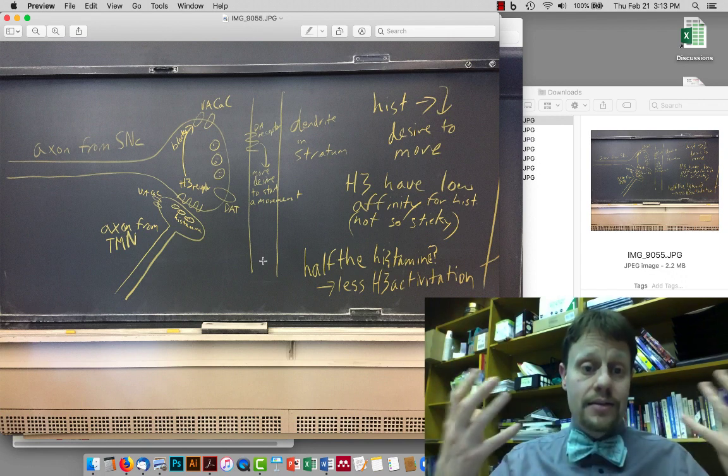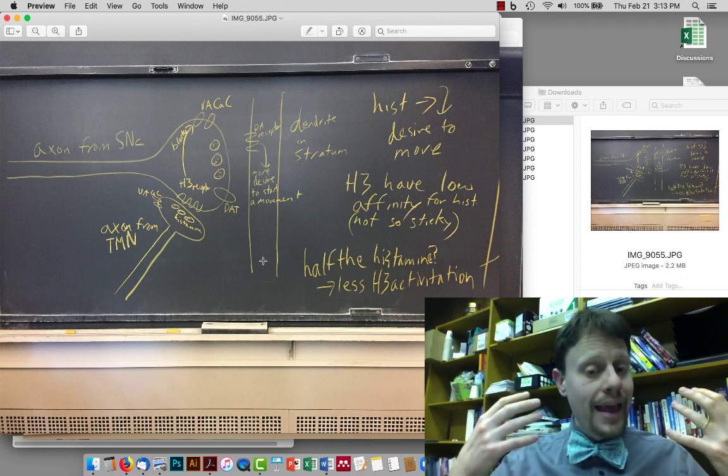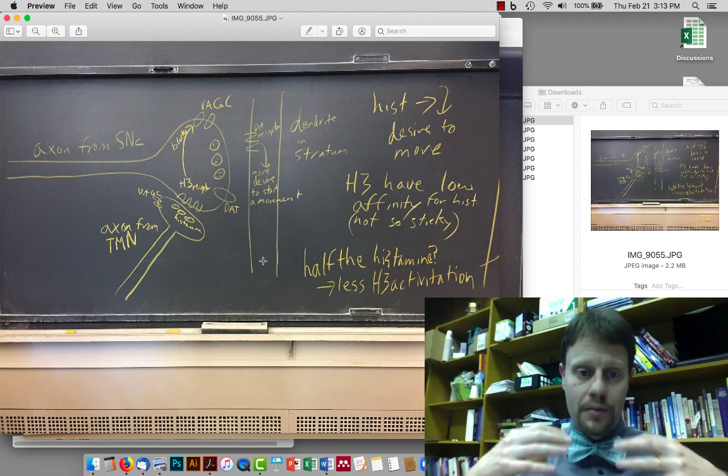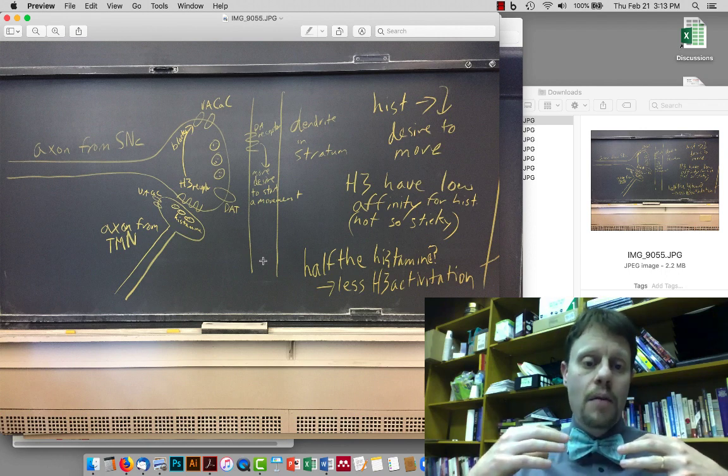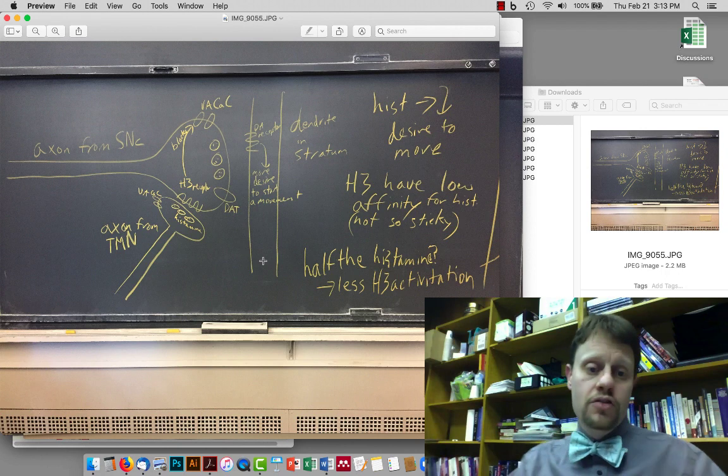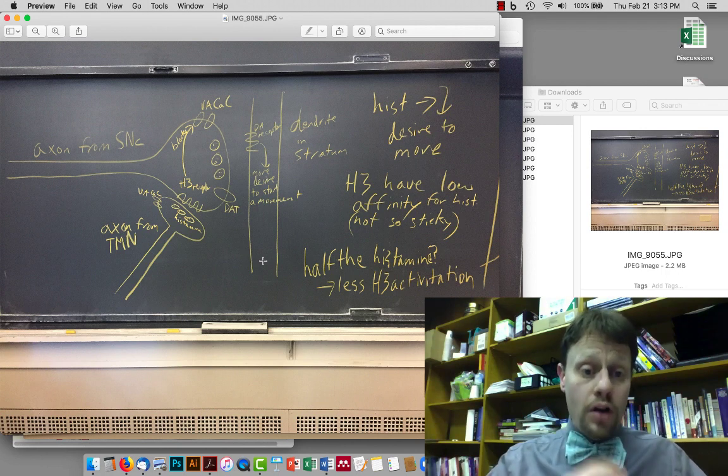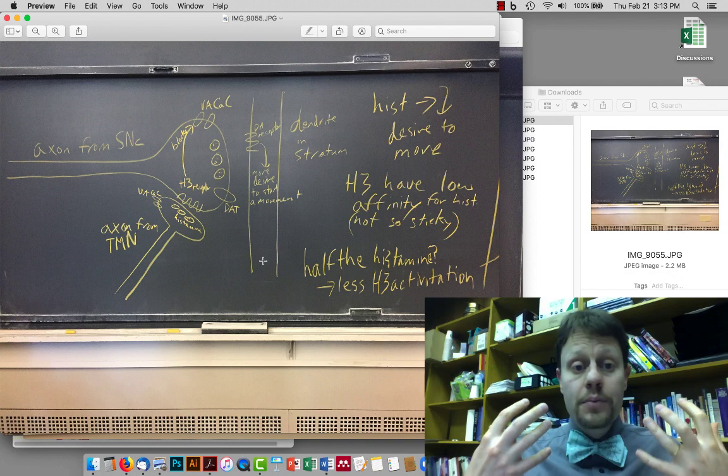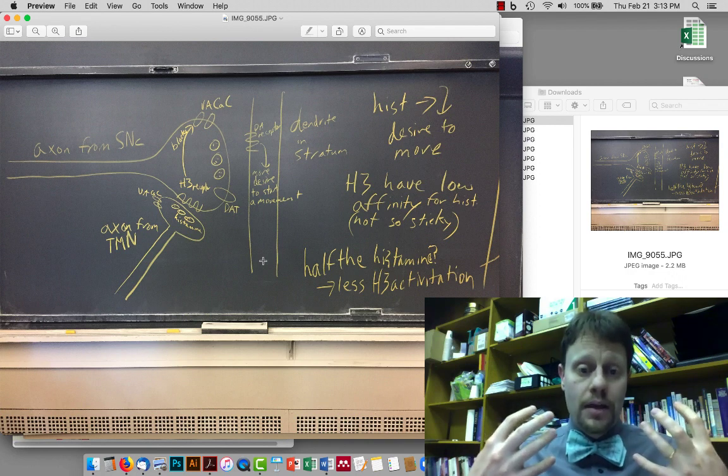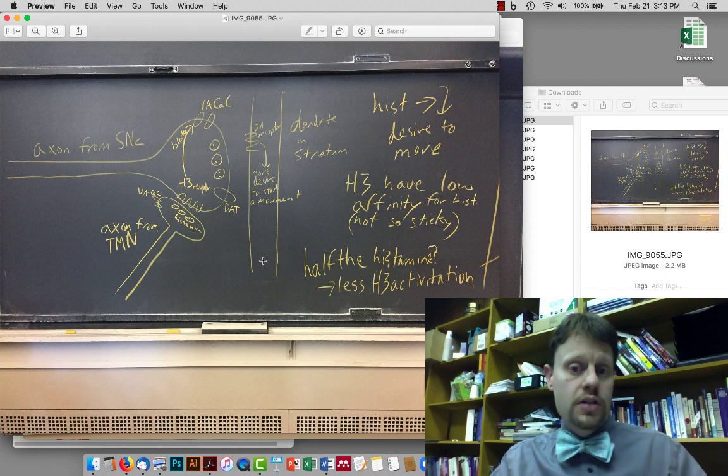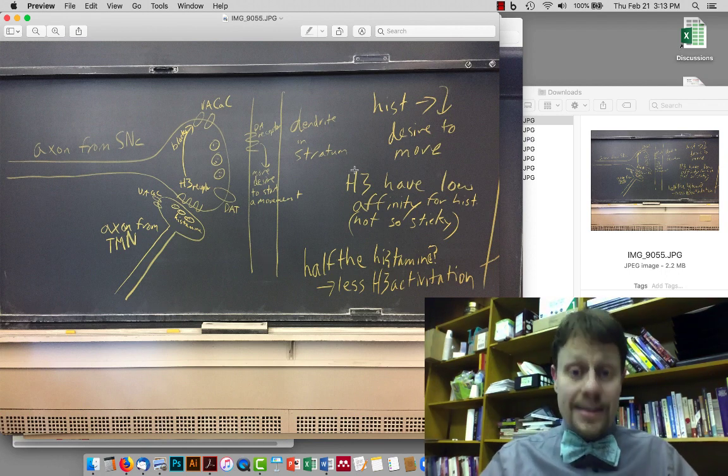In fact, these synapses are not at every dopamine-releasing connection in our striatum, but they are scattered throughout the striatum of everybody's brain. They're part of the way that our brains help to regulate the release of dopamine and prevent unwanted urges to move. So histamine causes a decrease in the desire to move.